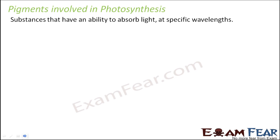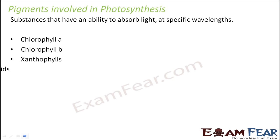Some examples of pigments which are involved in photosynthesis are chlorophyll A, chlorophyll B, xanthophylls, and carotenoids. You might be wondering that till now we thought there was only something called chlorophyll, but we have chlorophyll A and chlorophyll B as well. They are different because of the difference in their structures.